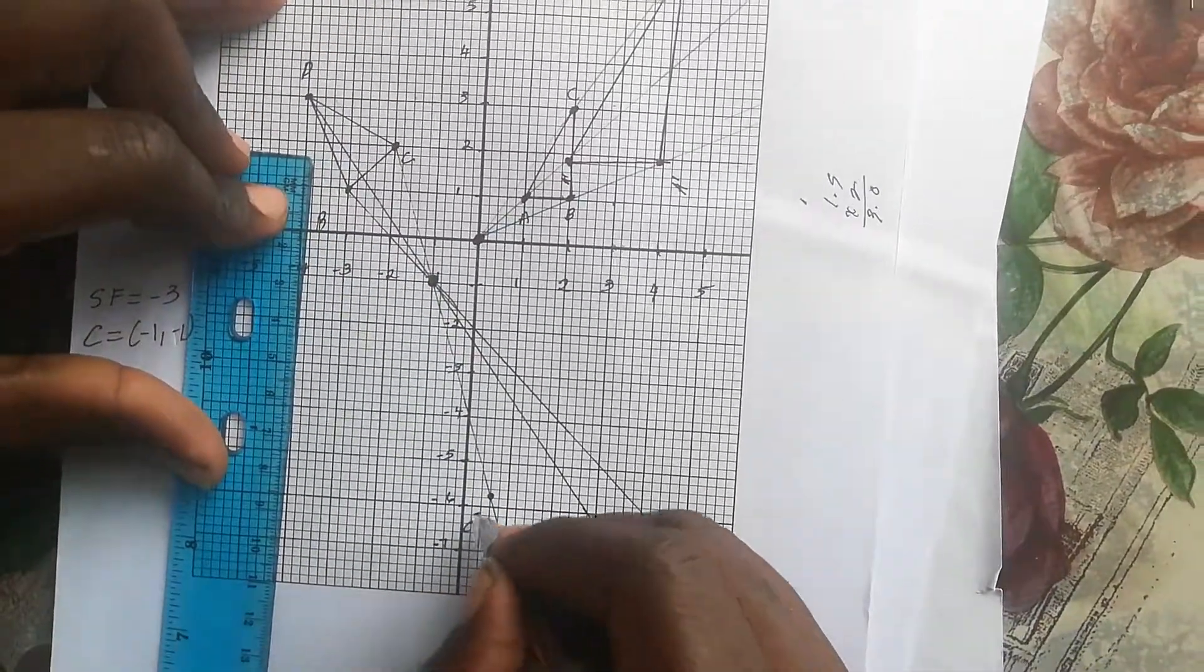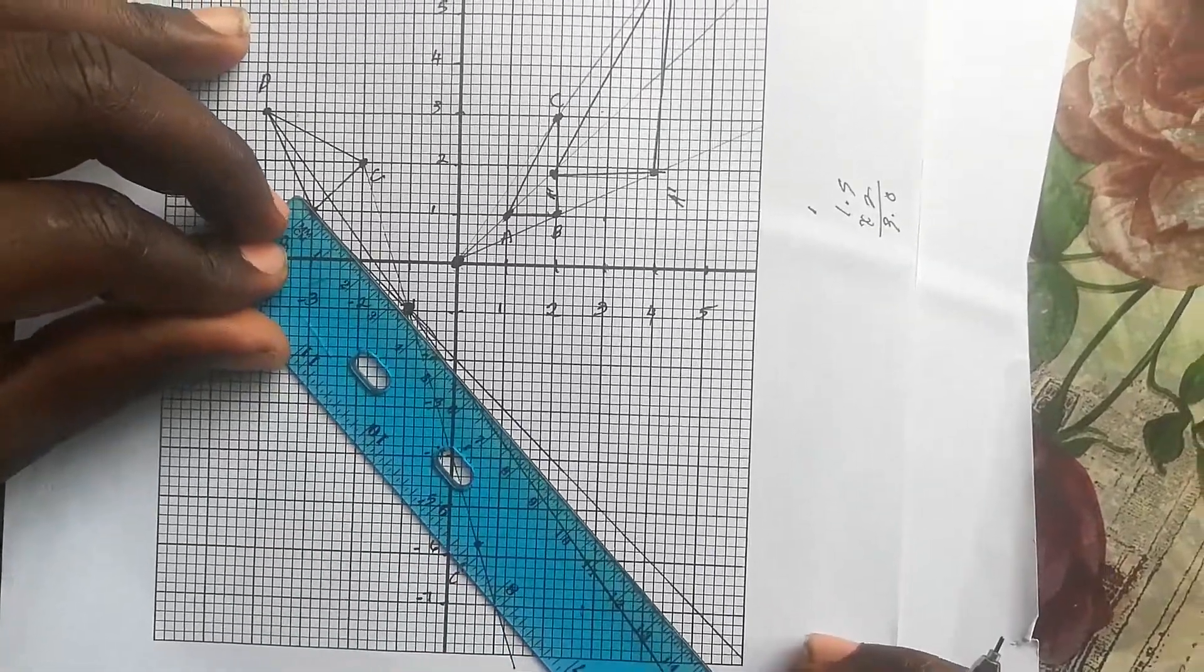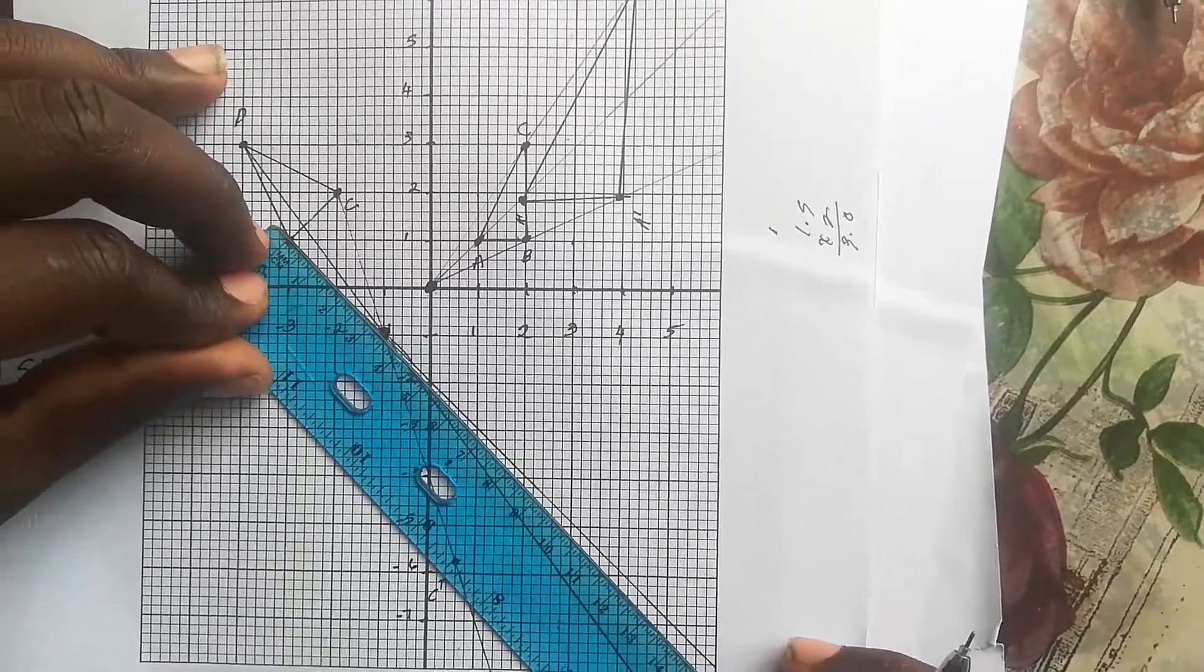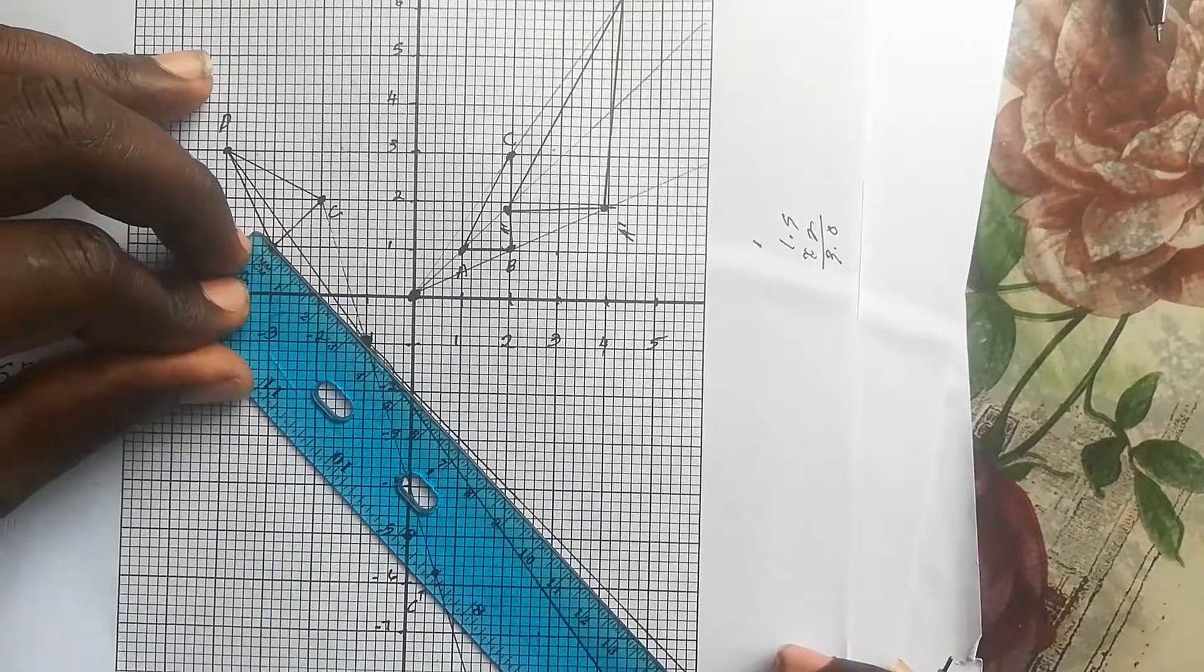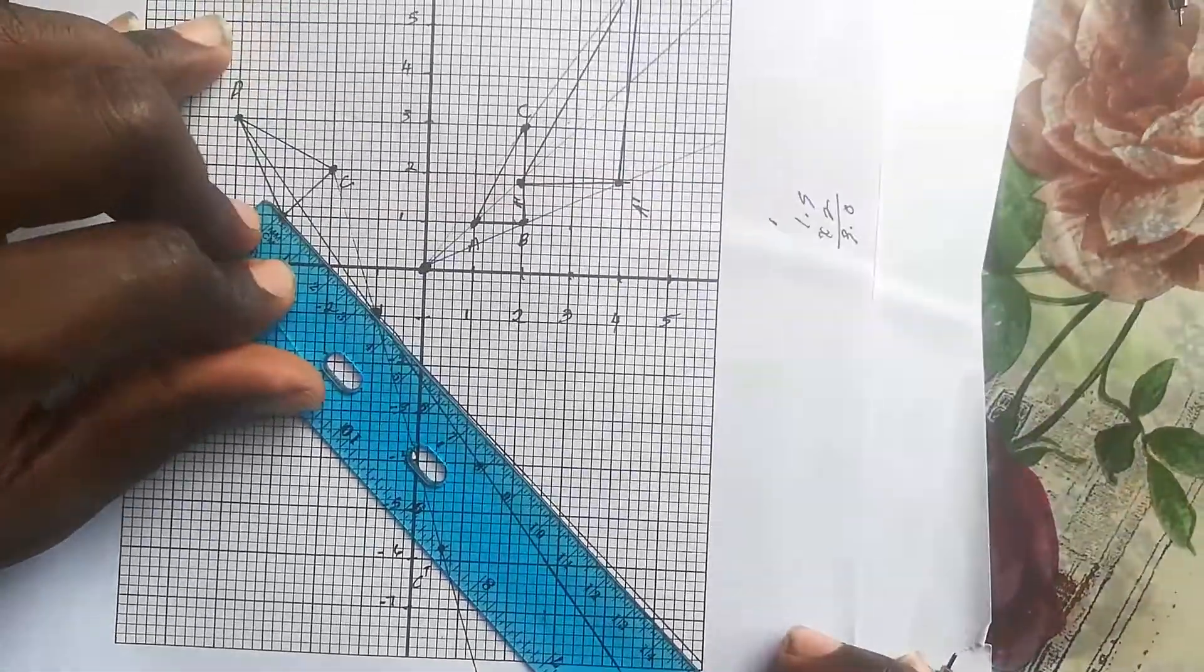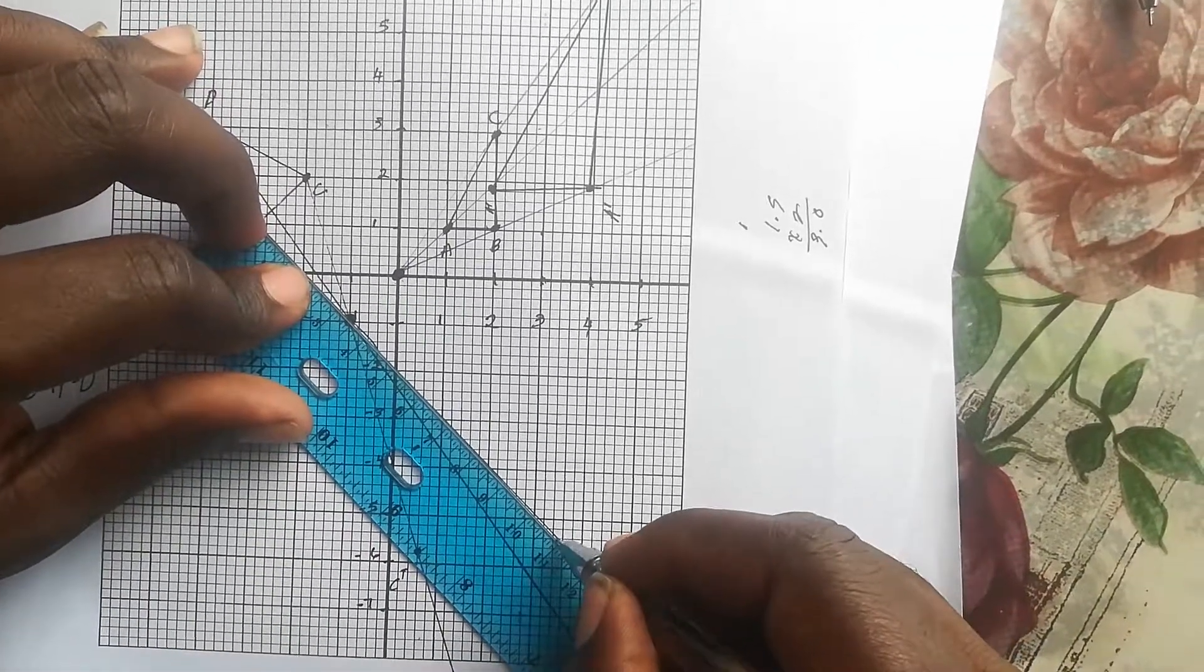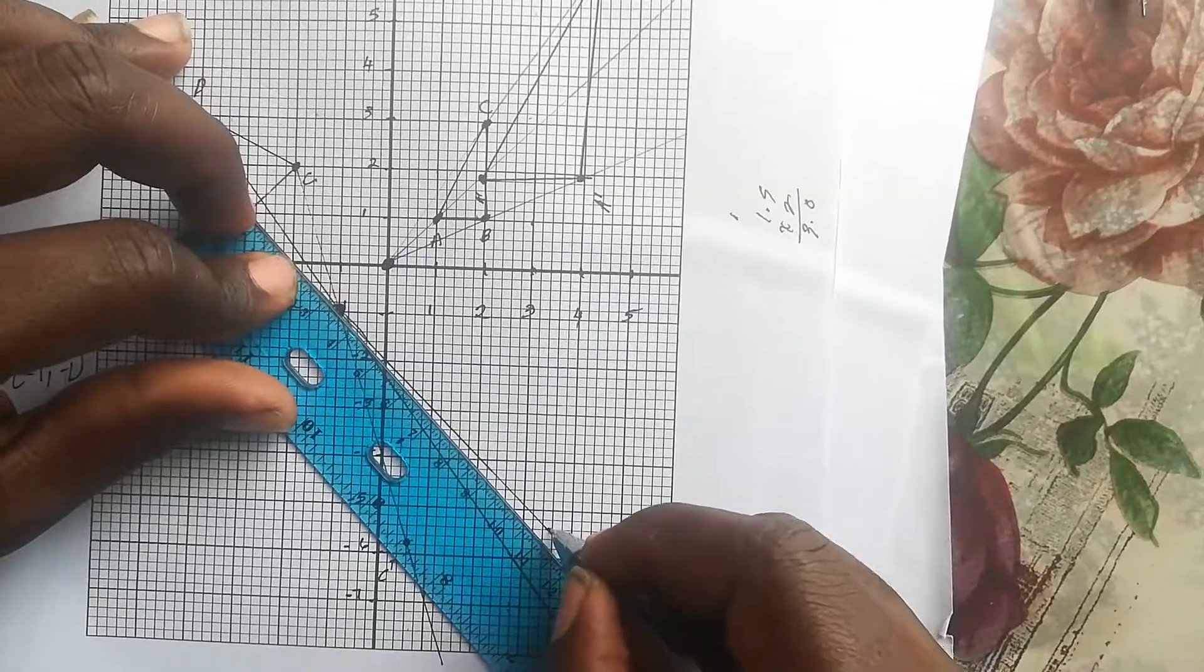From B to our center is 3.6, and 3.6 times 3 is 10.8, so on this line we're going to measure 10.8.